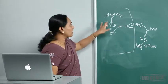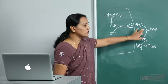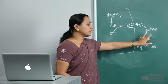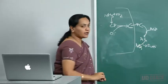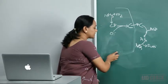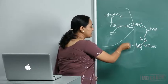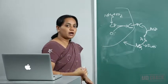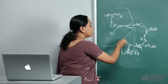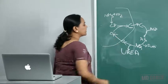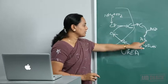To summarize the cycle so far: ammonia combines with carbon dioxide to form carbamoyl phosphate, which reacts with ornithine to form citrulline. Citrulline exits the mitochondria and reacts with aspartate to form argininosuccinate, which is cleaved by argininosuccinate lyase to release fumarate and arginine. Arginine is then cleaved by arginase to release urea, regenerating ornithine.